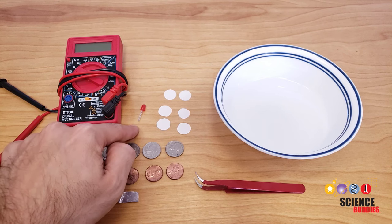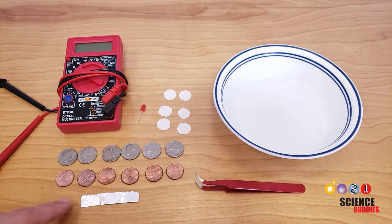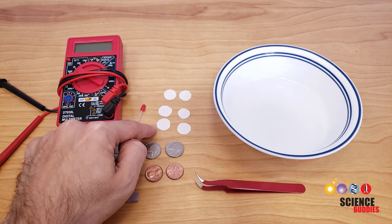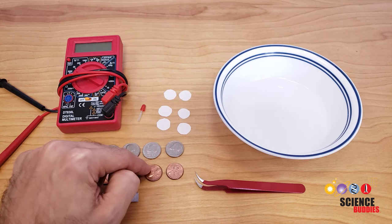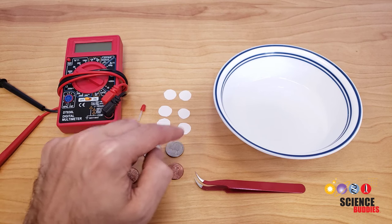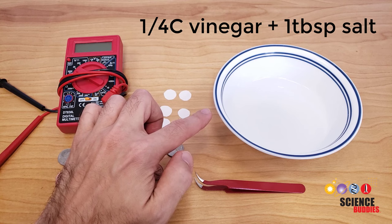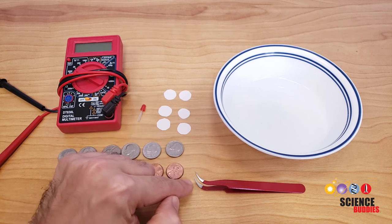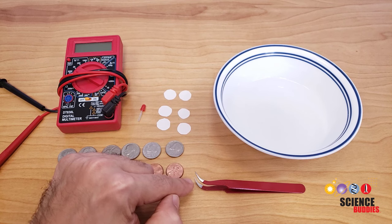You will also need a red LED, a small strip of aluminum foil, small circles cut from either construction paper or paper towels that are slightly smaller than the pennies, a bowl with one quarter cup of vinegar mixed with one tablespoon of salt, and finally, tweezers can make it easier to handle all the small parts.